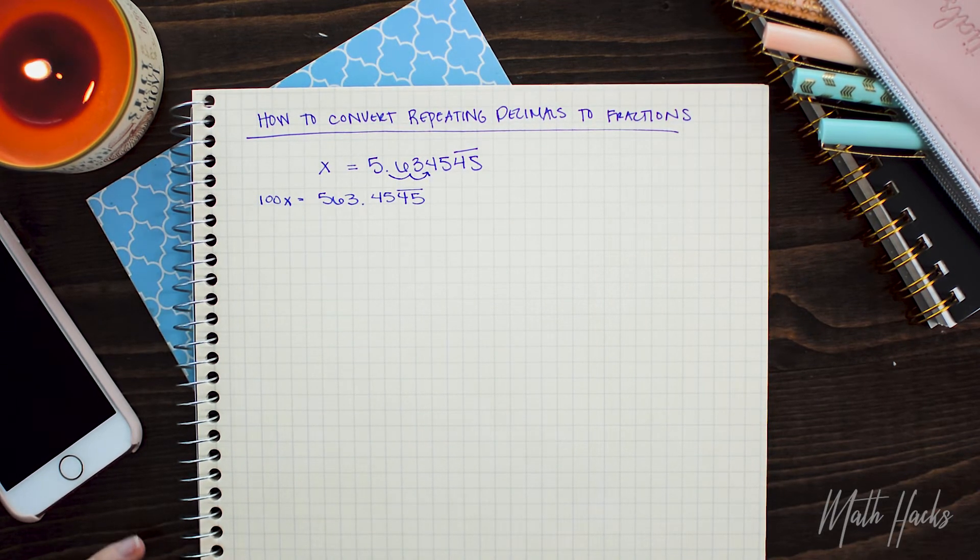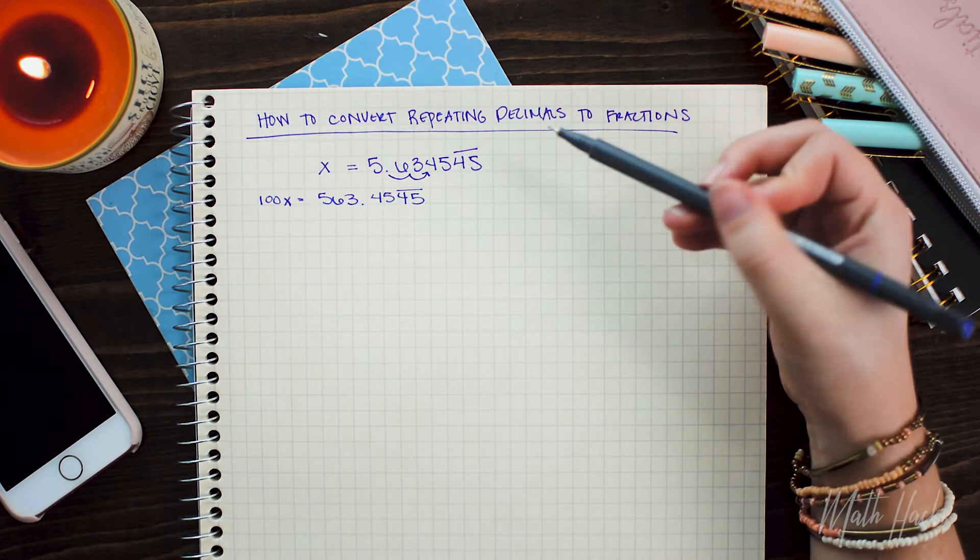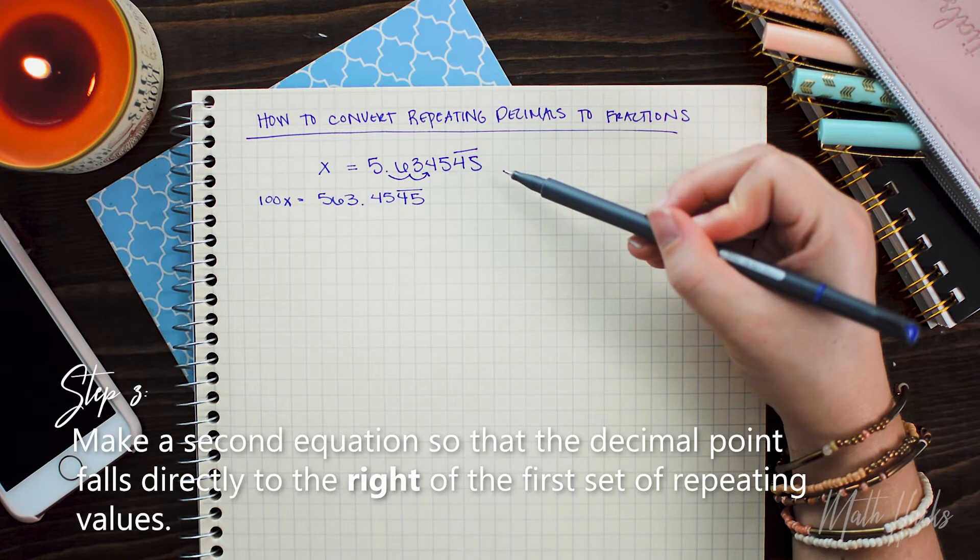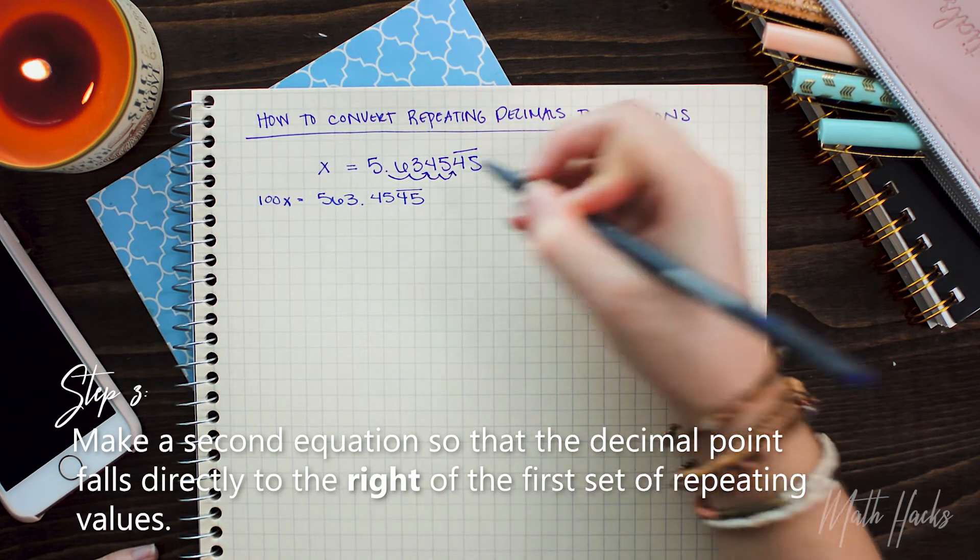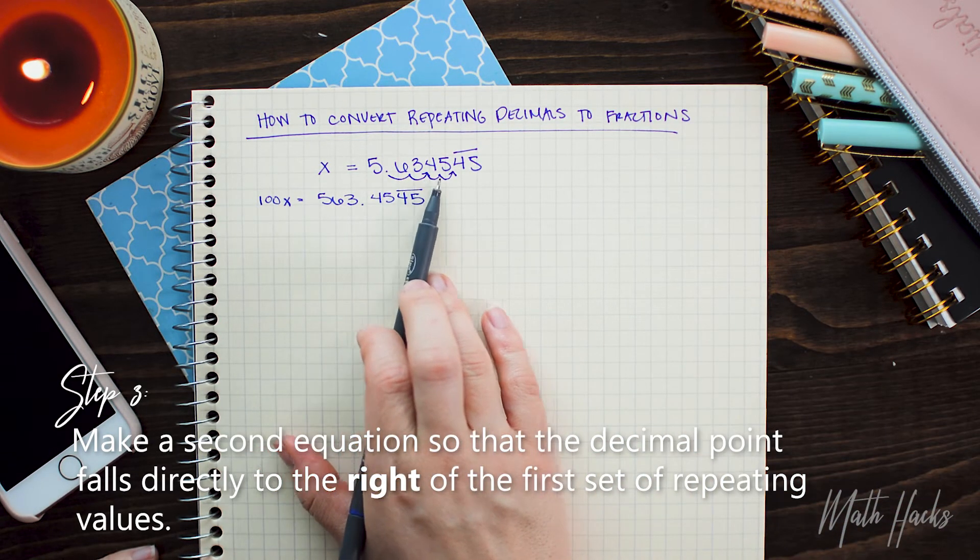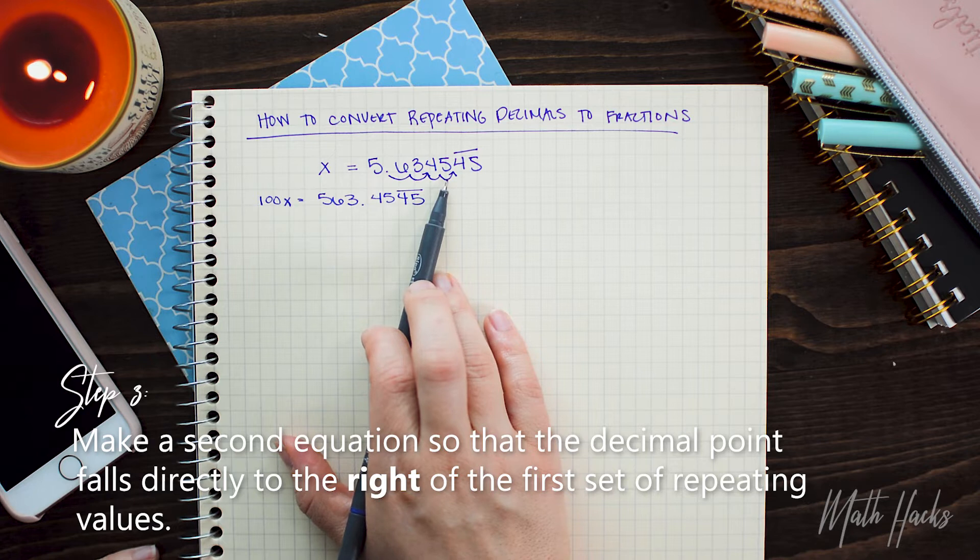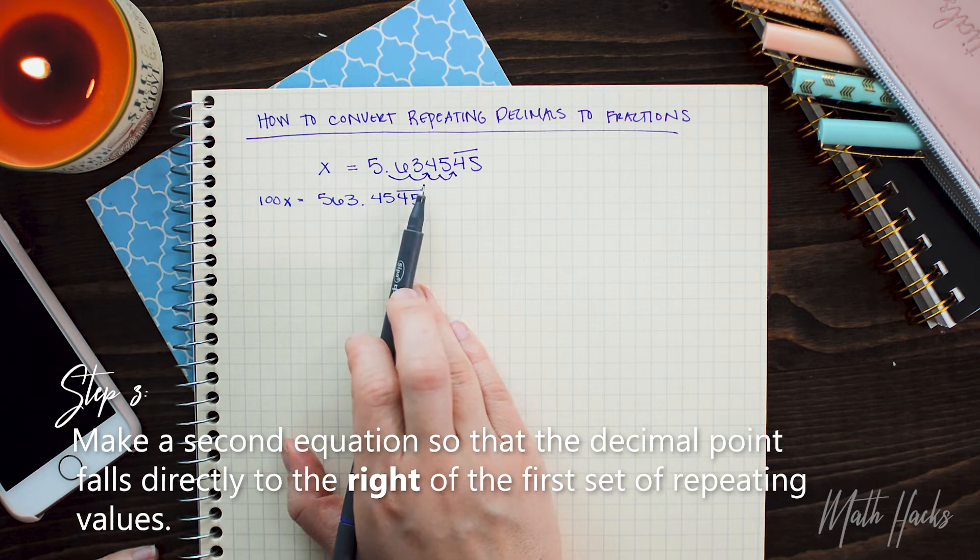Now equation number two, we need to alter this original equation so that this time the decimal falls directly to the right of the first set of repeating decimals. So that's going to be an additional two places over. So all I need to move the decimal is one, two, three, four places. So I'll be multiplying both sides of this equation by 10,000 this time.